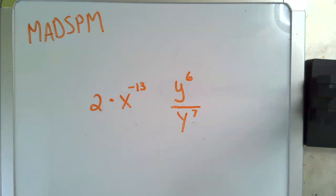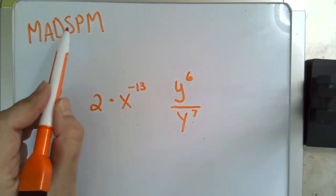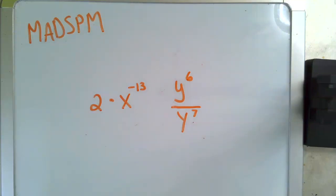And finally, y to the six divided by y to the seven. Again, when I divide, I subtract. So that becomes y to the six minus seven, which is just y to the negative one.